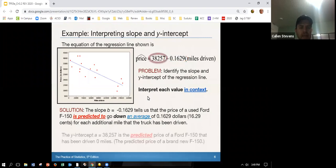If we take a look at what we have here, this is the y-intercept. So here a is equal to 38.257. So what does that mean in context? Well that means the predicted price of the Ford F-150 that has been driven zero miles. That's the predicted price of a brand new Ford F-150. Now this may not be perfect, but what we do is we've grabbed these data points, we've found the line of best fit or the regression line and this is what the model tells us. And that's how we would interpret those two in context.